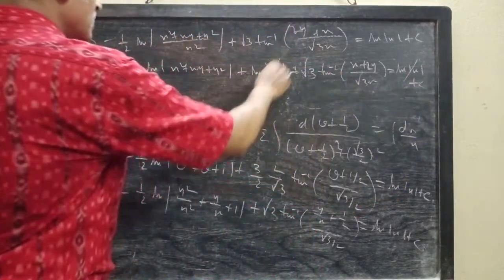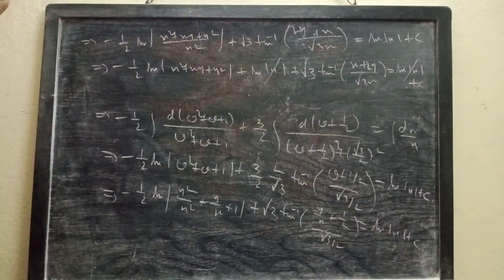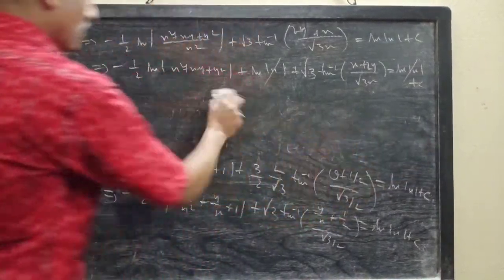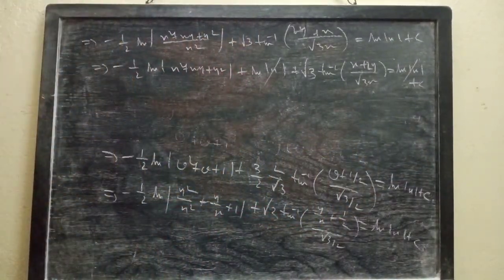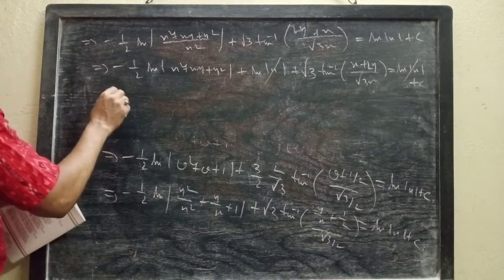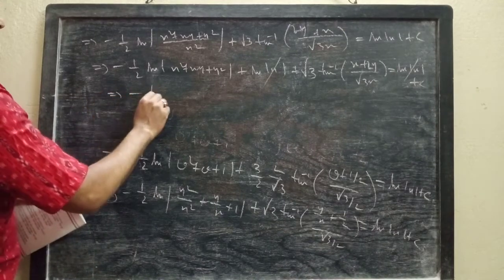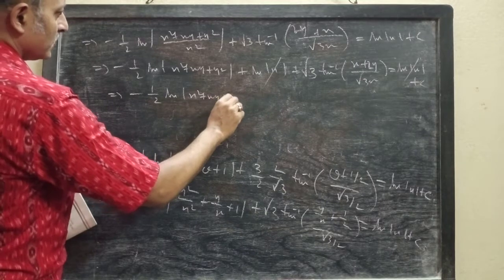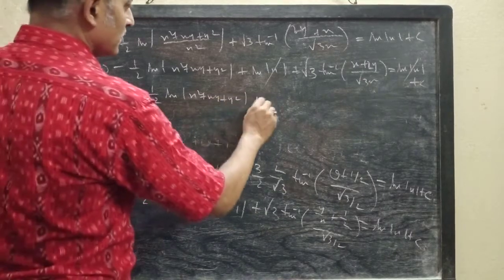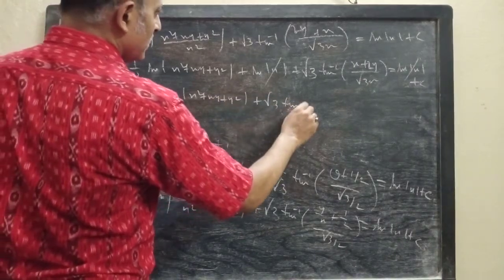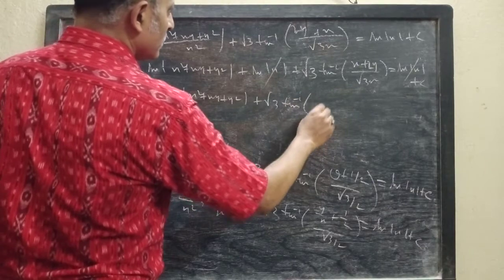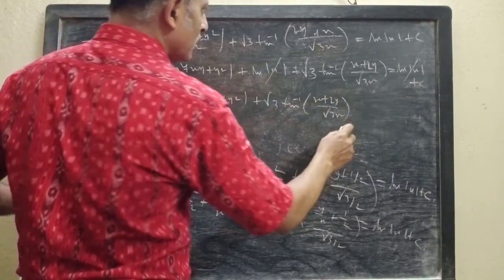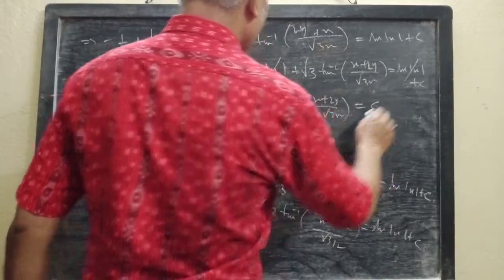Simplifying, ln|x| cancels from both sides, so the general solution is: minus half·ln|x² plus xy plus y²| plus √3·tan⁻¹((x plus 2y)/(√3·x)) equals c.